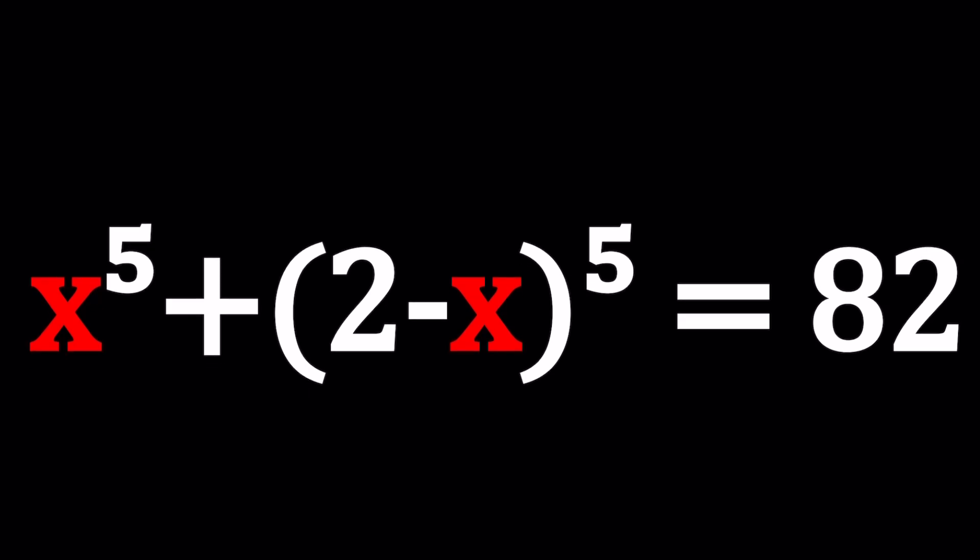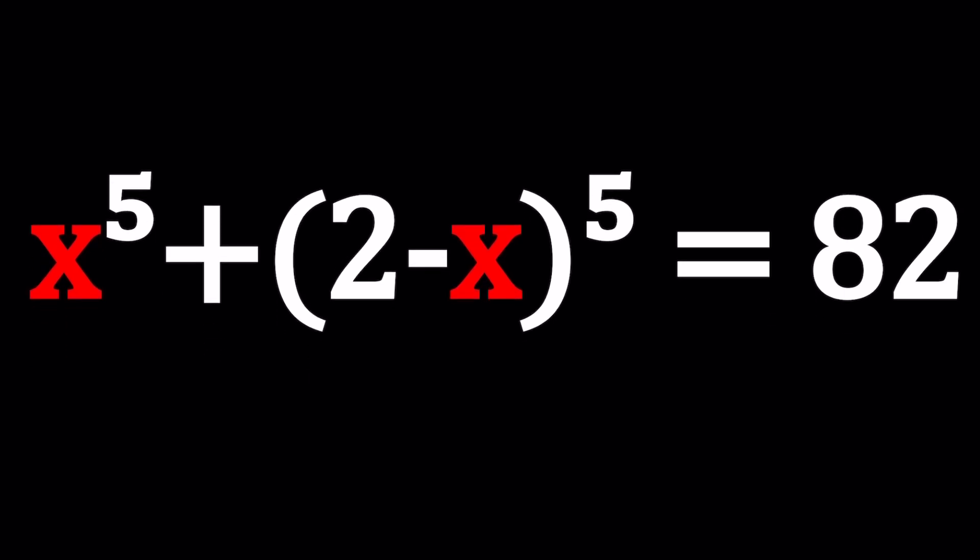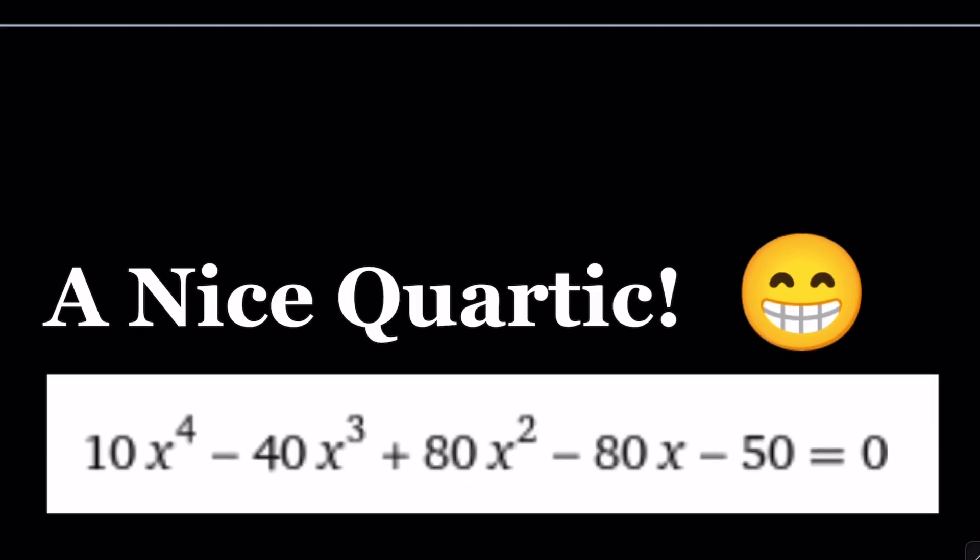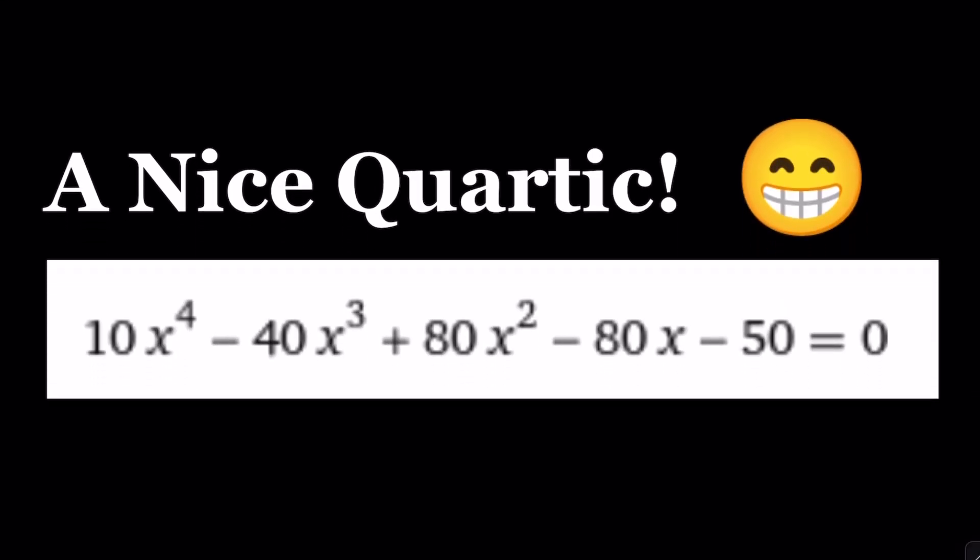Now, this might look like a quintic equation, but it's actually not quintic. Because when you expand the second expression, you're going to get a negative x to the fifth power, and that's going to cancel out. So we're going to end up with a quartic equation. If you just work it out, you're going to end up with something like this. Isn't that nice?